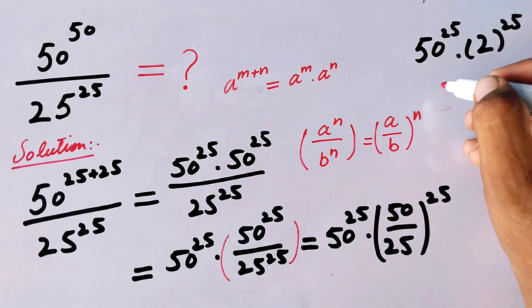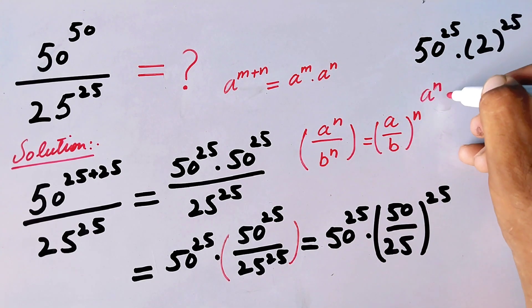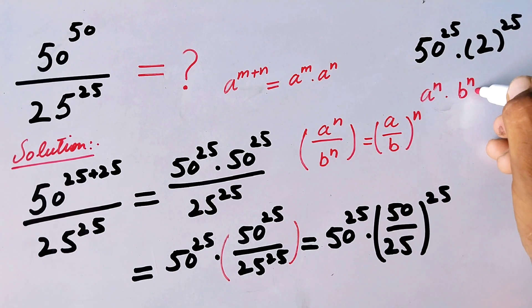So now the above equation will become (50 multiplied by 2)^25.